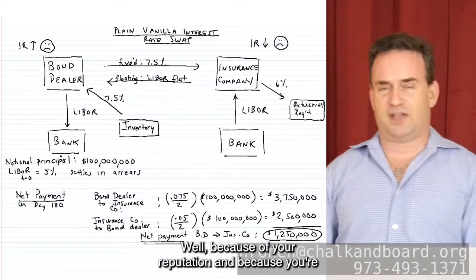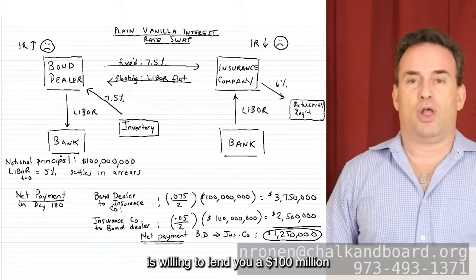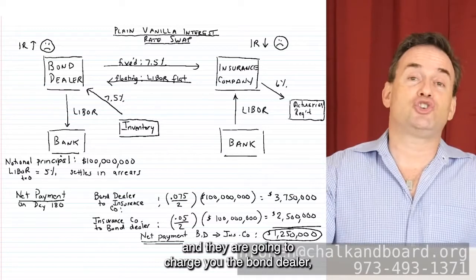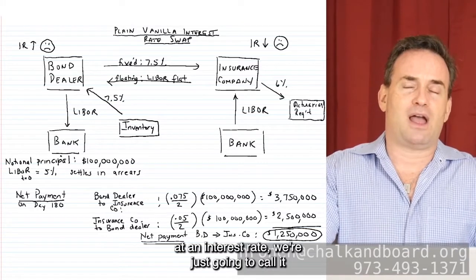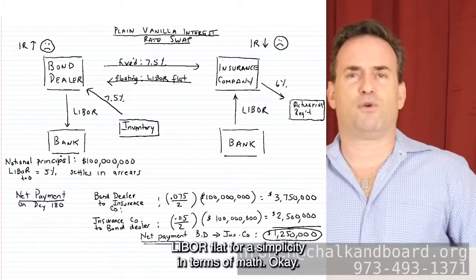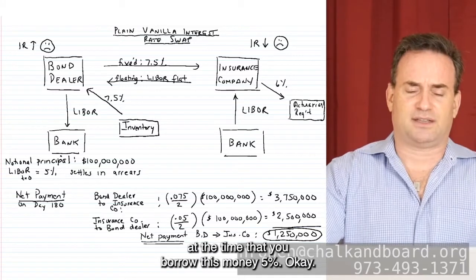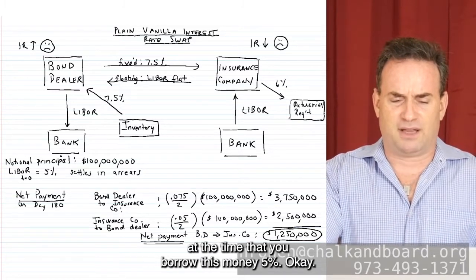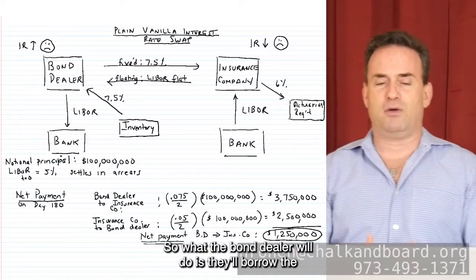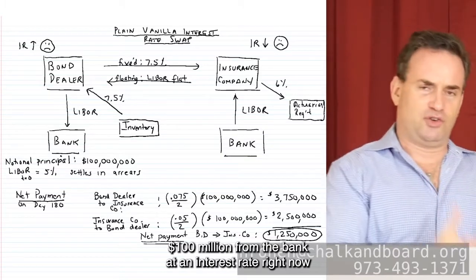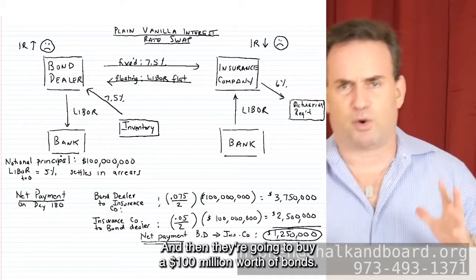Because of your reputation and because you're well known, a bank is willing to lend you the $100 million, and they're going to charge you, the bond dealer, an interest rate on that — we'll call it LIBOR flat for simplicity. They're going to charge you LIBOR, and we're going to say that LIBOR initially is 5%. So the bond dealer borrows $100 million from the bank at 5%. Remember LIBOR — the London Interbank Offer Rate — is fluctuating. Then they're going to buy $100 million worth of bonds as inventory.